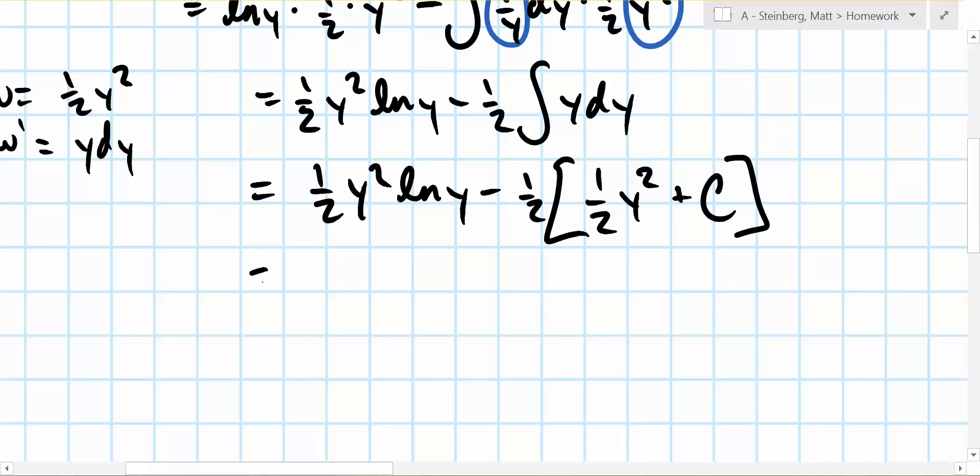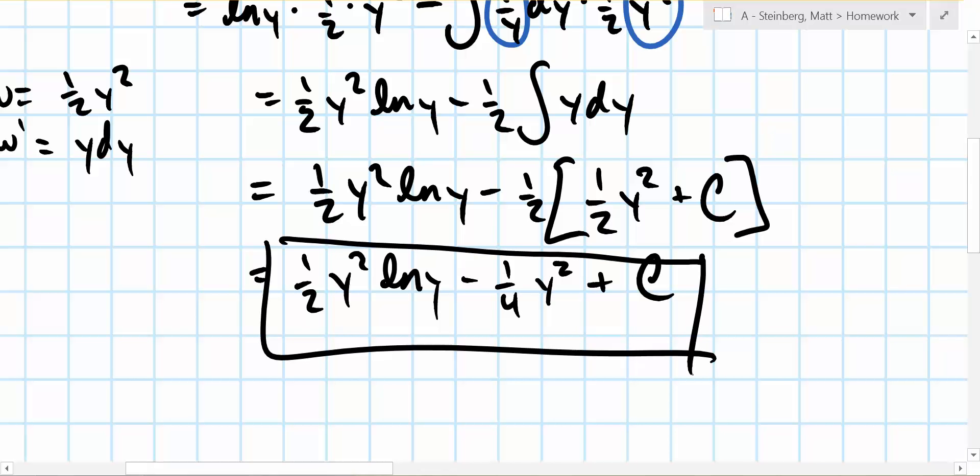So then all this is equal to 1 half y squared ln y minus 1 fourth y squared plus c. And because c is a constant it doesn't matter that it gets multiplied by negative a half. And that's our answer right there. That's it.